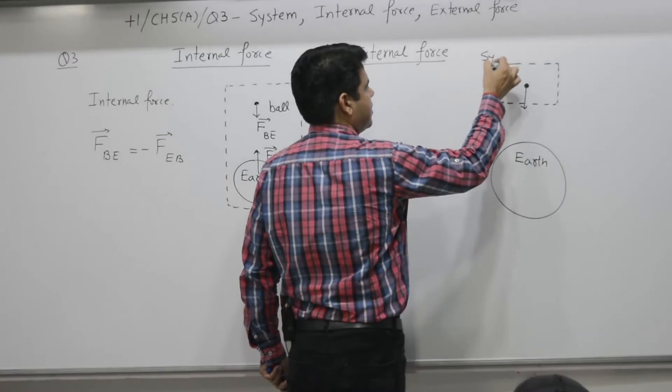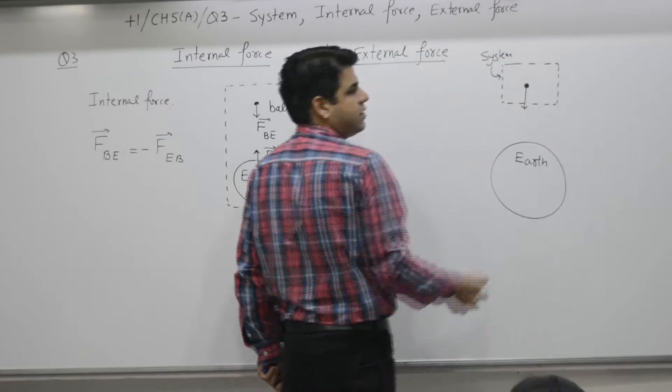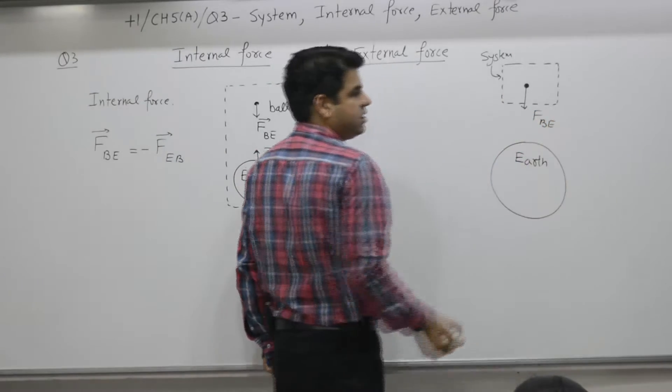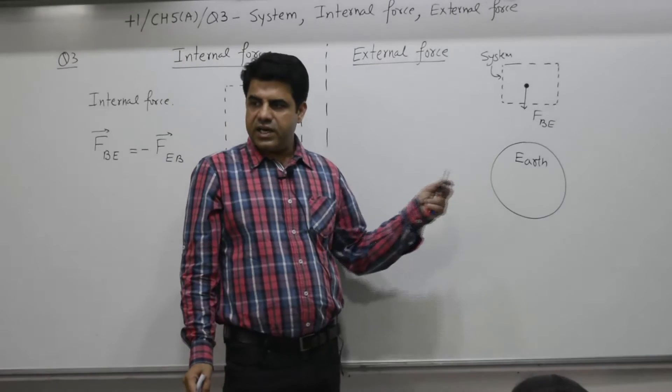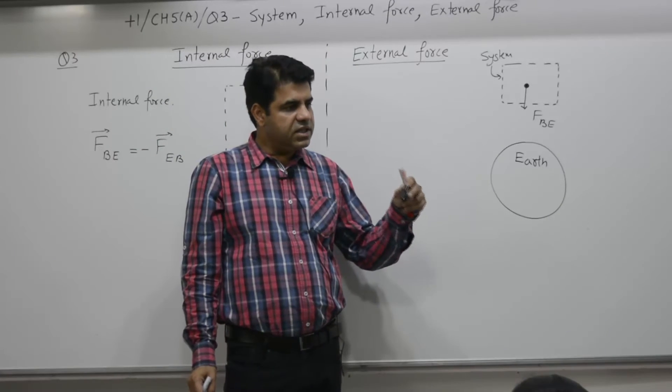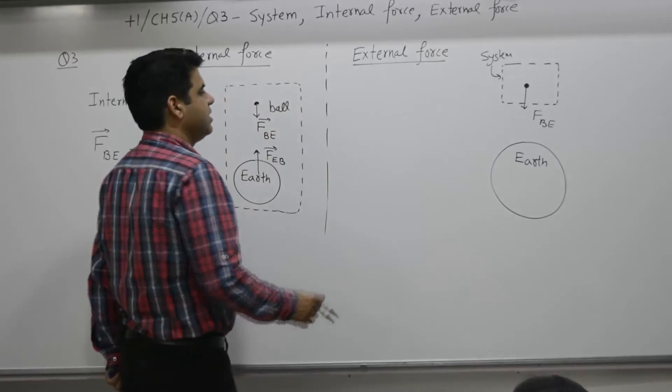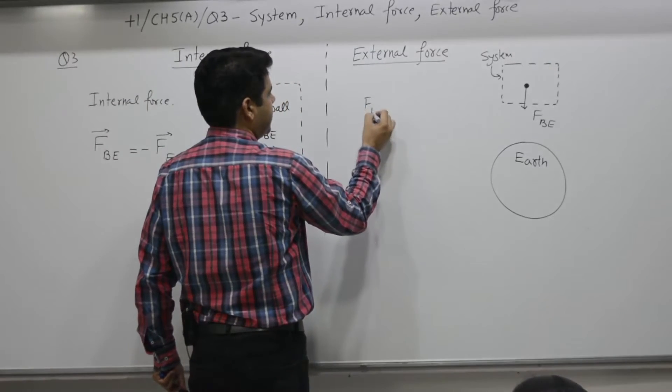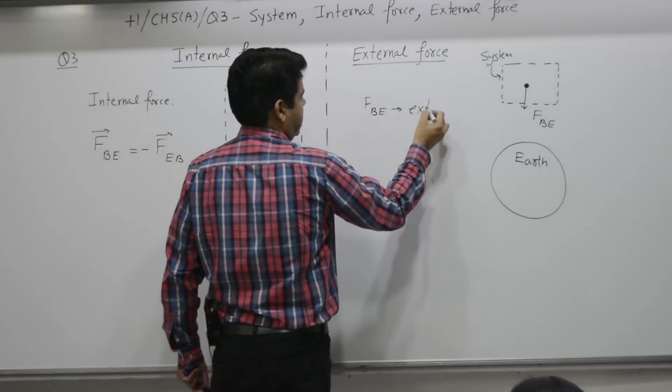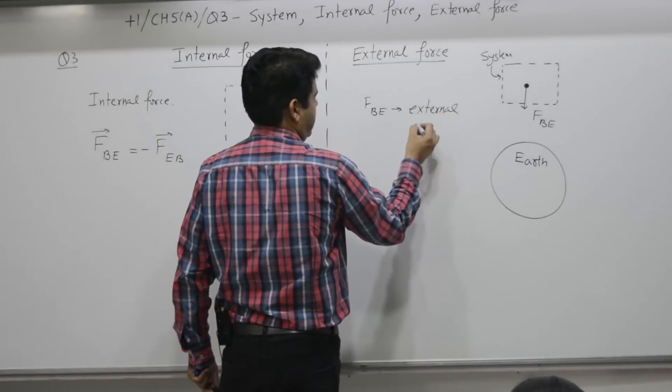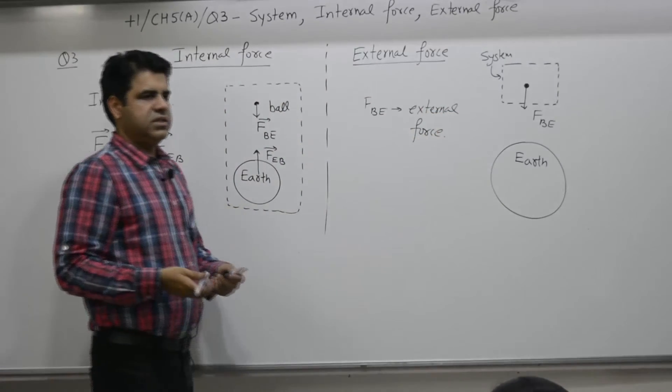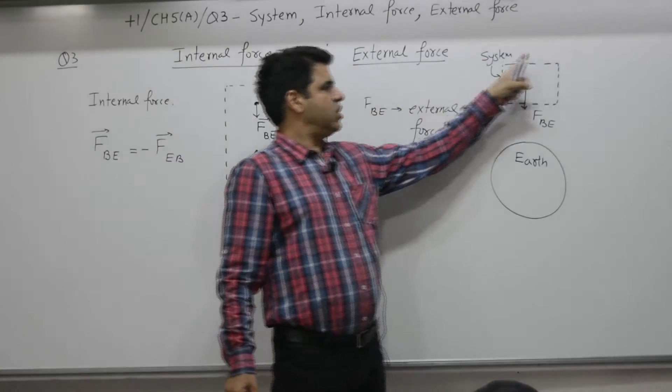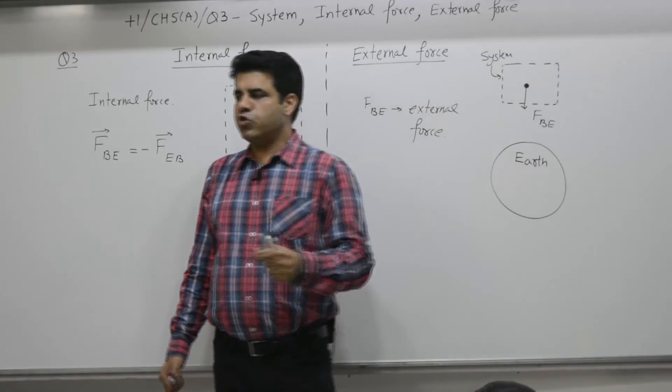The system is only the ball. Source of this force on ball due to earth, the source of this force is earth, and earth is within the system or outside the system? Outside the system. That is why this force, in this case force F_BE is external force. That means it all depends on you. If you want to analyze the two, the same force becomes internal. If you want to analyze only the ball, then the same force becomes external.